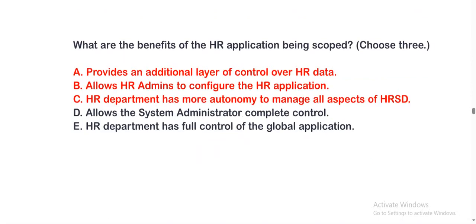What are the benefits of the HR application being scoped? Choose three options. Option A: provides an additional layer of control over HR data. Option B: allows HR admins to create an additional layer of control over HR data. Option C: HR department has more autonomy to manage all aspects of HR SD. Option D: allows the system administrator complete control. Option E: HR department has full control of the global application. The correct options are A, B, and C.